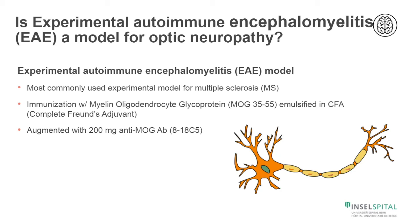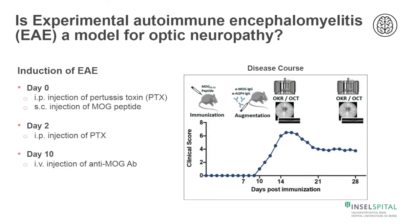So the question is: could we use the experimental model of autoimmune encephalomyelitis as a model for optic neuropathy? EAE, the most common experimental model for MS, is induced by immunization with myelin oligodendrocyte glycoprotein emulsified with complete Freund's adjuvant. We are using an augmented version of the model, where we additionally inject an anti-MOG antibody.